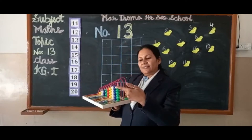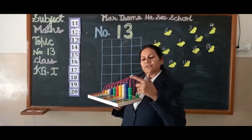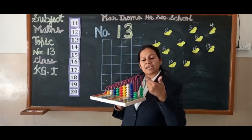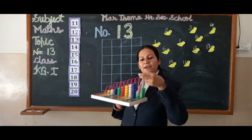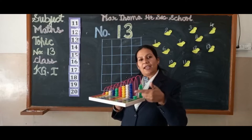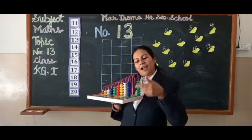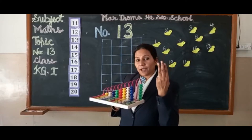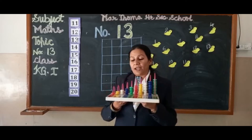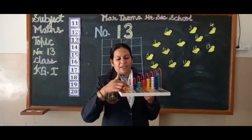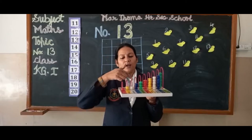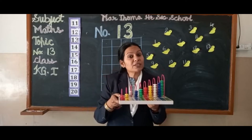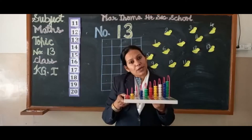One, two, three, four, five, six, seven, eight, nine, ten. Ten and three together make 13. So where is number three? This is number three. Count: one, two, three. Means one and three together make 13.